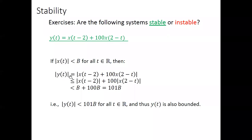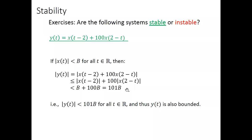We look at the absolute value of y(t). Applying the so-called triangle inequality, we can split this absolute value so that each individual term is less than B. So this gives 100B plus B, which is 101B. Since 101B is also a constant, y(t) < 101B for all time t. Therefore y(t) is also bounded.